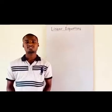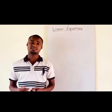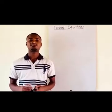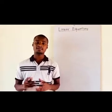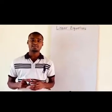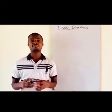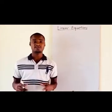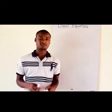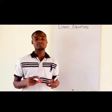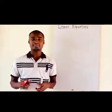An equation is a mathematical statement that has the equal sign. Today we are going to look at equations that involve one variable and we are going to use two different methods to find the value of a given variable in a linear equation. The first method is grouping of like terms and the second method is called balancing.